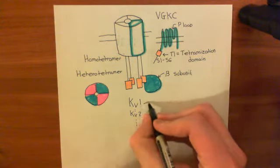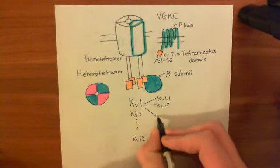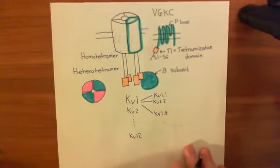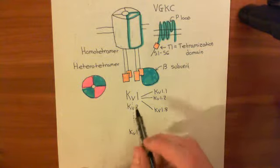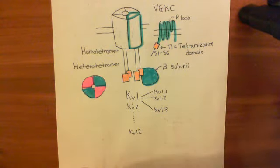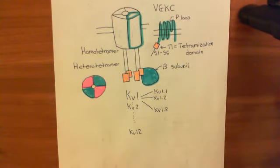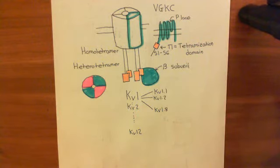For instance, KV1 has the KV1.1 gene, the KV1.2 gene, and then it goes on all the way down to the KV1.8 gene. So that family has eight different genes for voltage-gated potassium channels. The KV2 will then have members within it, and all of these 12 families will have some genes within them. The number after the decimal point tells you which actual gene it is.